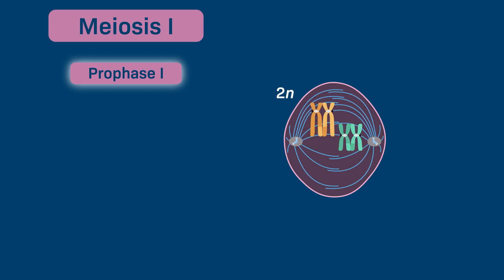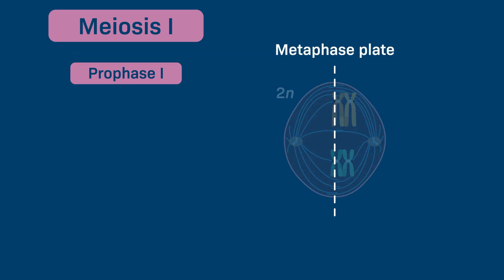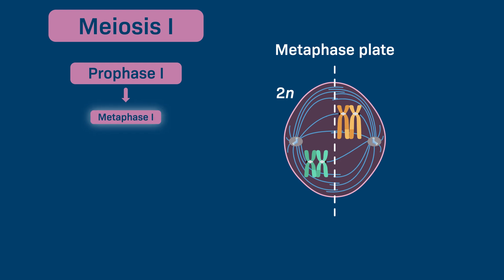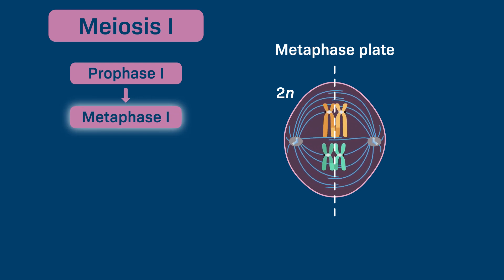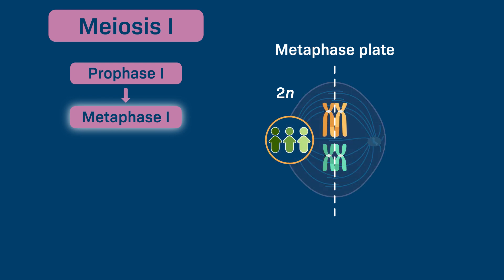The microtubules move the pairs of homologues back and forth toward the metaphase plate. Metaphase I occurs once the pairs of homologues are randomly and independently aligned along the metaphase plate. This also helps to introduce genetic variation.